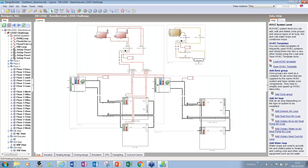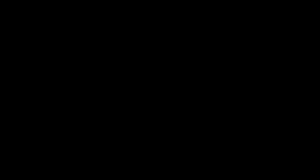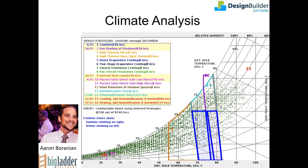The baseline then gave us our minimum energy performance goal to shoot at, but ultimately we wanted to get to net zero. As we began to consider the proposed building design, we wanted to become as familiar as possible with the Nebraska climate — none of us actually live in Nebraska. So Aaron used the Climate Consultant software to investigate the suitability of Nebraska's climate for an assortment of energy-related design strategies.